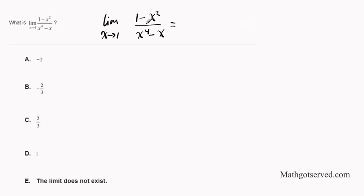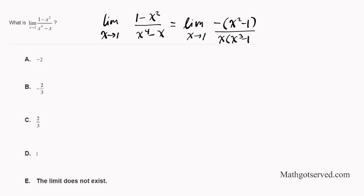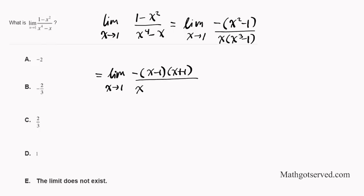I am going to reverse the order of the subtraction in the numerator. Reversing gives us negative (x squared minus 1). For the denominator, I can factor out an x: x times (x cubed minus 1). Now I can factor further — using difference of squares, the numerator becomes (x minus 1)(x plus 1). Using the difference of cubes formula, (x cubed minus 1) factors into (x minus 1)(x squared plus x plus 1).